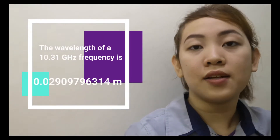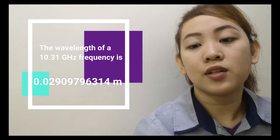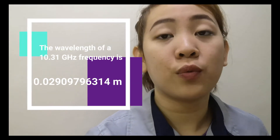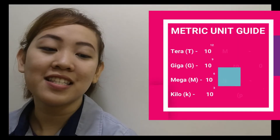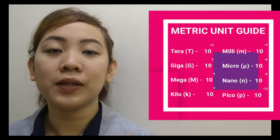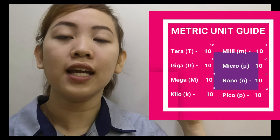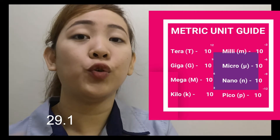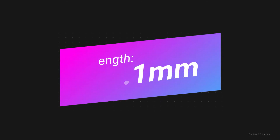The wavelength of a 10.31 GHz signal frequency is 0.02909796314 meters. That's too long to remember, so let's convert it again using our metric converter. That will leave us to converting it into millimeters, and we have to multiply it by 10 raised to negative 3, so that would be 29.1 millimeters. We are done with our first frequency. Now let's compute the second one.